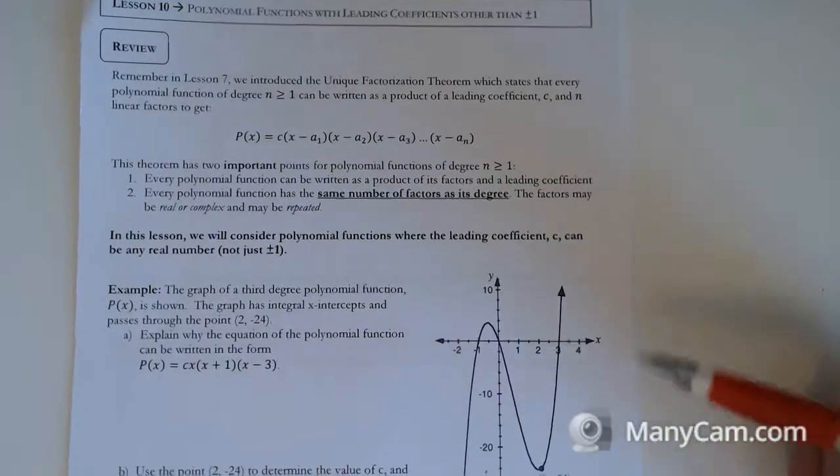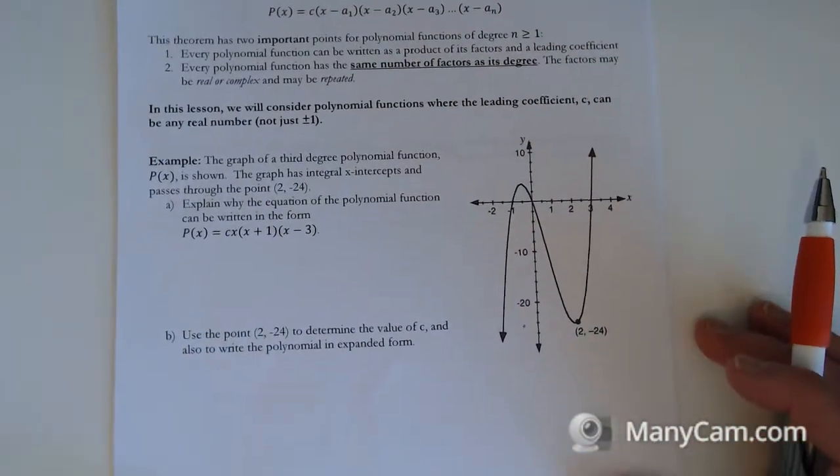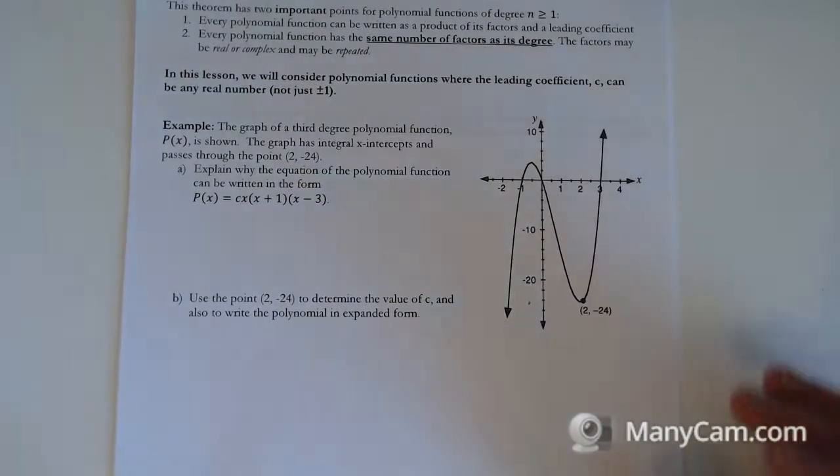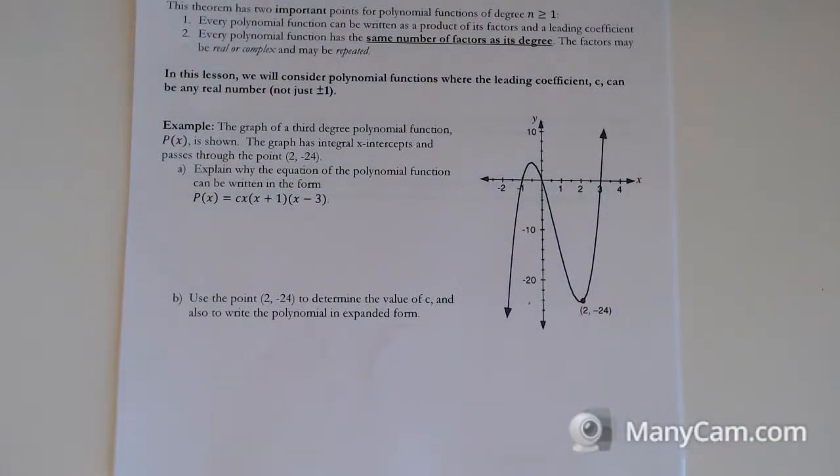It looks a little bit different on your sheet, but it's all the same information. Question 1. The graph of a third degree polynomial function is shown. The graph has integral x-intercepts and passes through the point 2 and negative 24. Explain why the equation of the polynomial function can be written in the form c times x times x plus 1 times x minus 3.